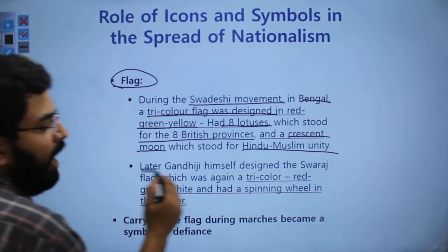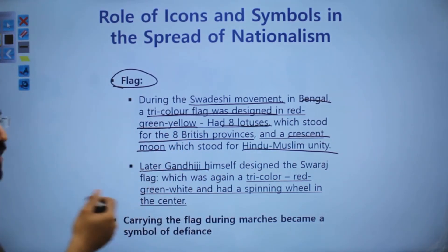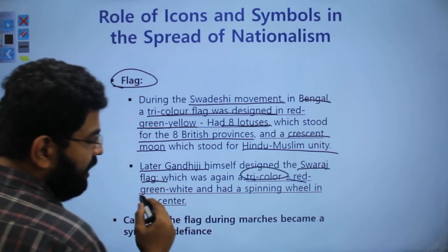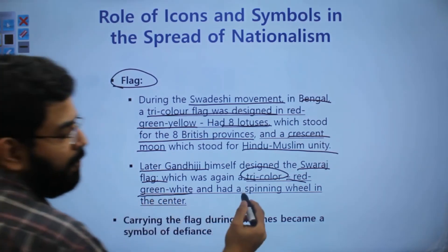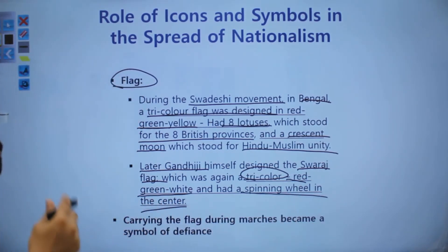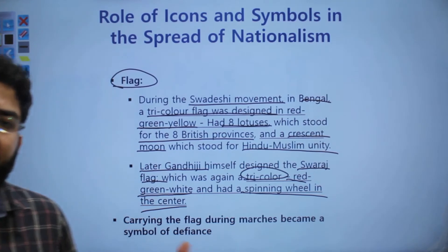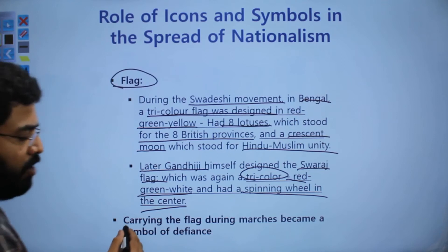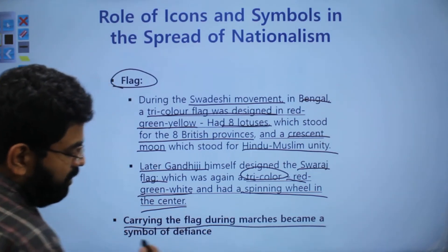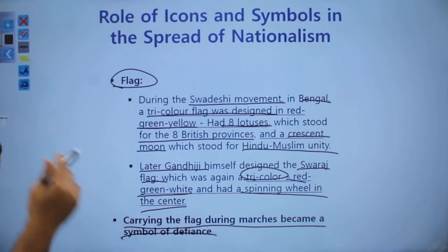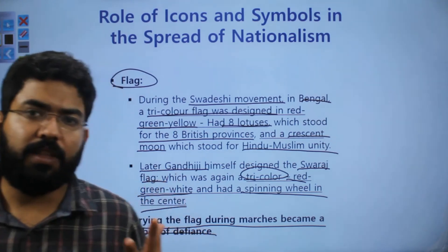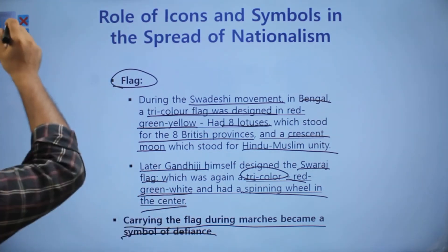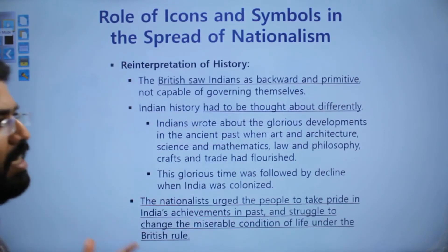Gandhi himself then designed another flag with a Swaraj theme — also a tri-color in red, green, and white, with a spinning wheel in the center. This flag became a symbol of protest and unity, and carrying the flag during marches became a symbol of defiance as well.